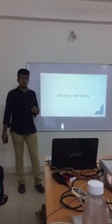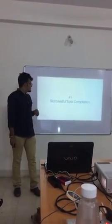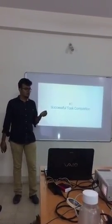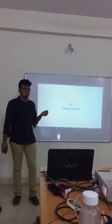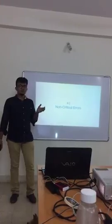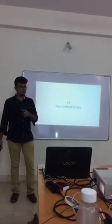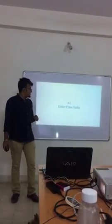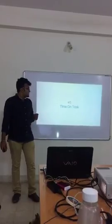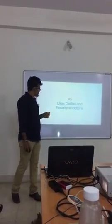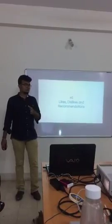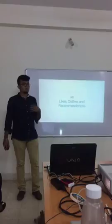The next step is to identify test metrics. The first is successful task completion — is the person able to complete the task or not? Second is critical errors — are there any errors which are stopping the users from completing the task? Third is non-critical errors — errors which the user recovered from on their own. Fourth is error-free rate — the number of users who completed the task without any errors. Fifth is time on task — how long it takes the user to complete the task. Sixth is likes, dislikes, and recommendations — including satisfaction on a rating scale, what users liked, disliked, and their feature recommendations.